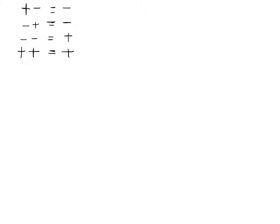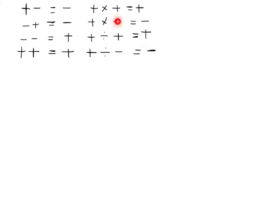For multiplying and dividing: a plus times a plus equals a plus. If you have a plus times a negative, that equals a negative. A plus divided by a plus equals a plus, and a plus divided by a negative equals a negative. Where the signs are different — plus times a negative equals a negative, and a negative times a plus still equals a negative. You can switch these around and they still equal a negative. The same with division: plus divided by a minus is a minus, just as minus divided by a plus is also a minus. I'm going to leave this reminder box up here as we go through.